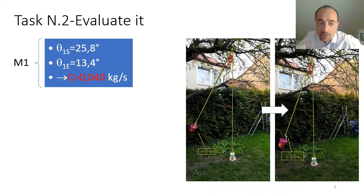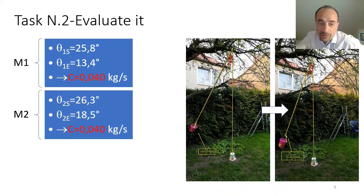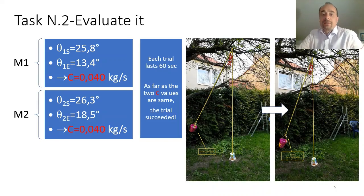Eventually, we are getting the angle at the beginning of the swing, the angle at the end of the swing, and we determine the coefficient C, the damping coefficient, for the two masses where the angles can be different. And each trial is lasting 60 seconds. And as far as the two C values are the same, then the trial succeeded.